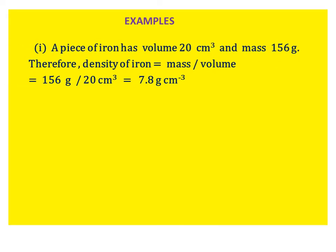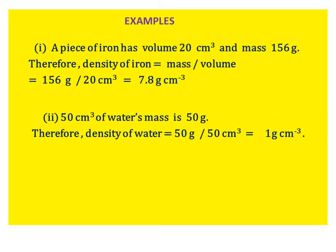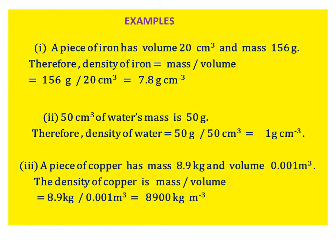Example 1. A piece of iron has volume 20 centimeter cube and mass 156 gram. Therefore, density of iron is equal to mass divided by volume, equal to 156 gram divided by 20 centimeter cube, equal to 7.8 grams per centimeter cube.